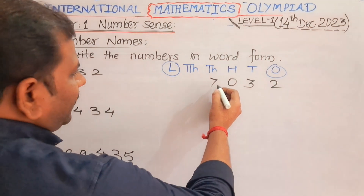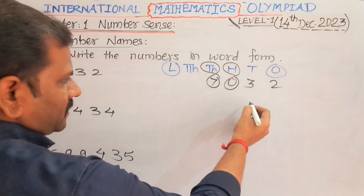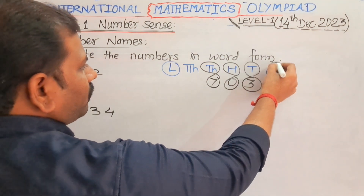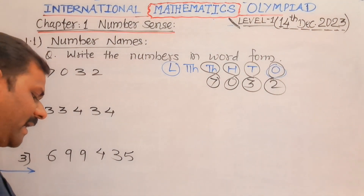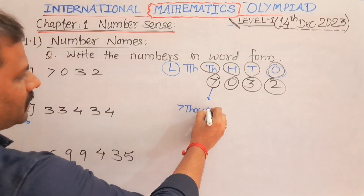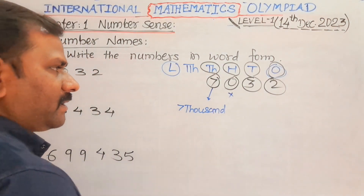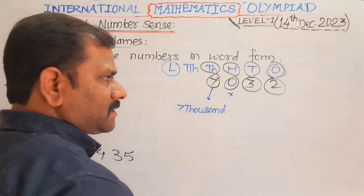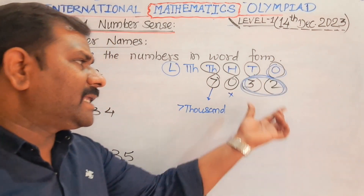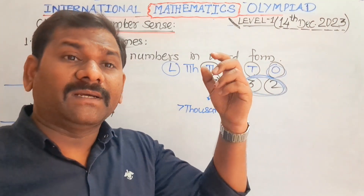Seven is located at the thousands place. Zero is located at the hundreds place. Three is located at the tens place. And two is located at the ones place. So according to this, let us write the number: seven thousand. Zero means nothing at the hundreds. Three tens and two ones — always remember to unite these two digits together and read them jointly.